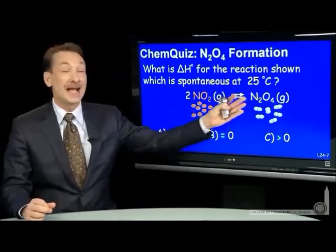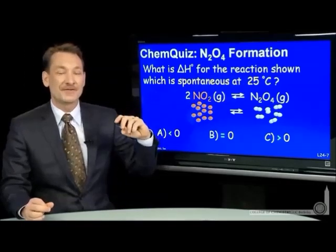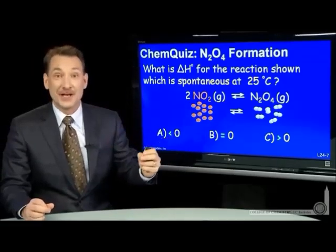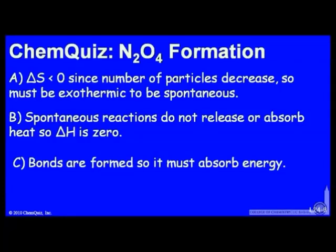Let's look at the dimerization of NO₂ to form N₂O₄. If I tell you the reaction is spontaneous at 25°C, what can you predict about the enthalpy change? Is it greater than, equal to, or less than zero? Consider: A — ΔS is less than zero since the number of particles decreases, so it must be exothermic to also be spontaneous; B — spontaneous reactions do not release or absorb heat, so ΔH = 0; or C — bonds are formed so it must absorb energy and ΔH must be positive.